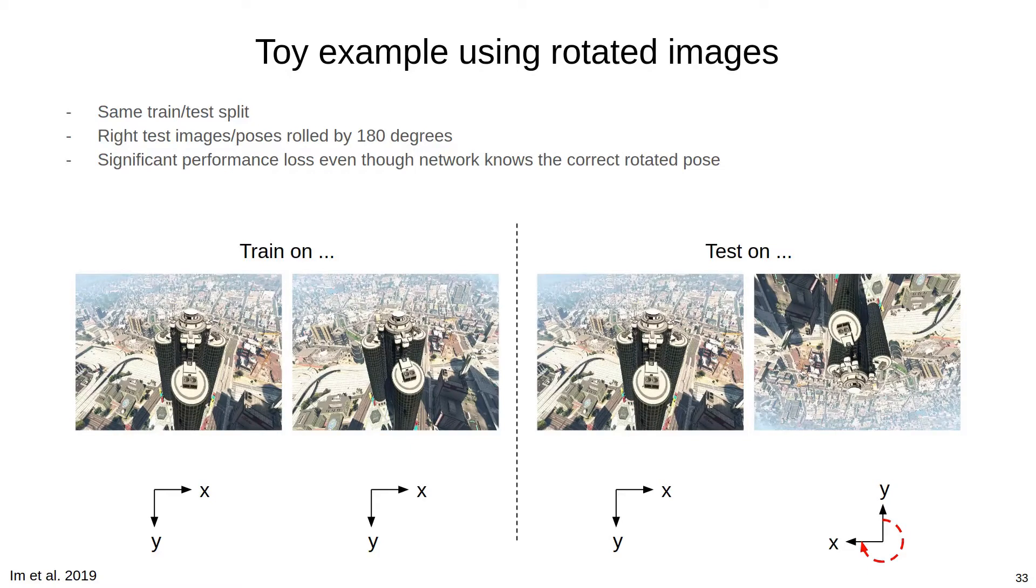A simple example of this problem can be shown by applying a roll operation between the training and testing sets of a learned MVS system. Given a learned MVS network that performs well on a given training and testing split, all that it usually takes to break the system and incur a massive drop in performance is to roll the images in the test set by 180 degrees. So we train the network with the images on the left, but test the network with images on the right. Most learned MVS networks will not handle the simple transformation of the input gracefully.